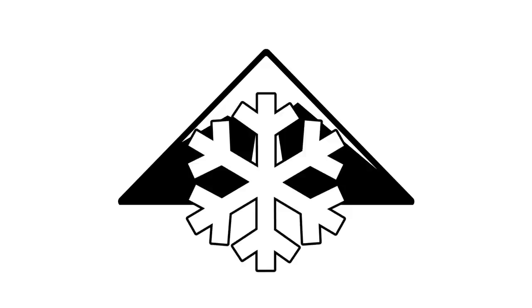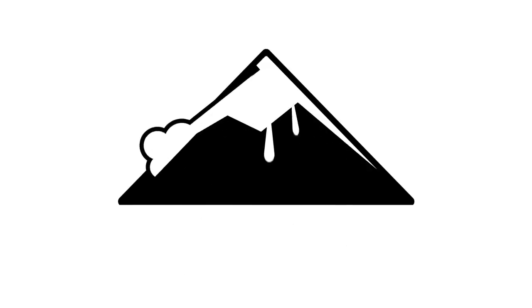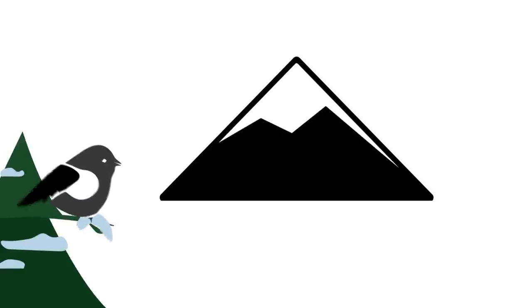Avalanches have a wide variety of personalities. They can be small or large, wet or dry, slabs or loose snow. Sometimes avalanches are seemingly spontaneous, while at other times they require big triggers to get them to start.